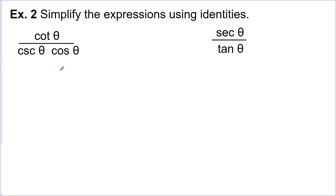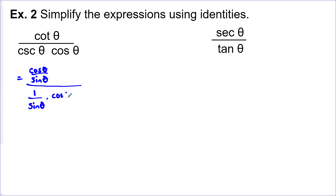Let's practice simplifying trigonometric expressions. The first one: we have cotangent theta in the numerator — let's replace that with cos theta over sine theta. In the denominator, we have cosecant theta — replace that with 1 over sine theta. And cos theta is just fine. The numerator and the denominator are actually the same, so they cancel and we're left with 1. This expression simplifies to 1. However, since we got rid of all our information, we need to record our non-permissible values: sine and cos are both in the denominator, so neither can equal zero — theta cannot equal pi over 2n, where n is an integer.